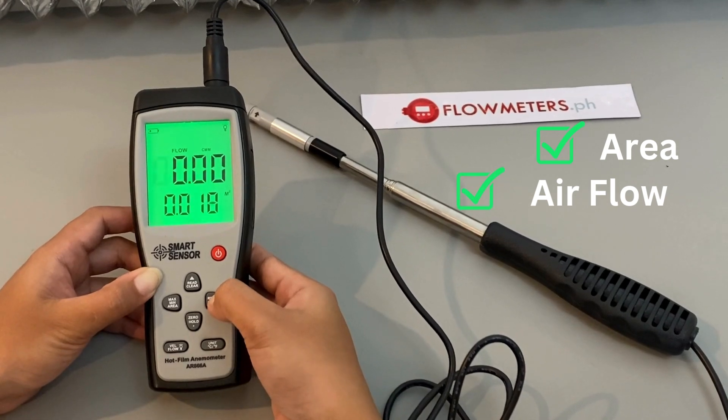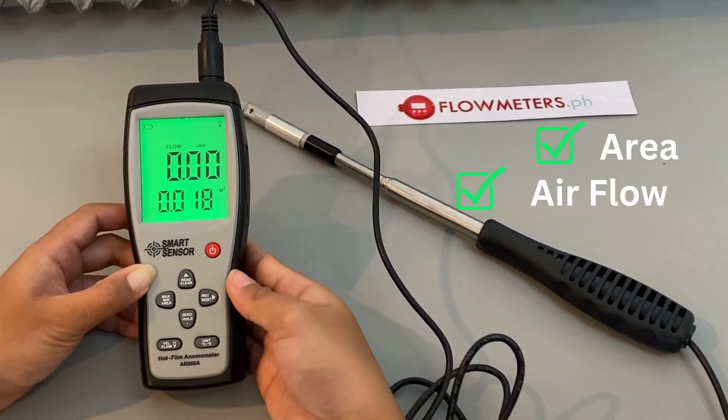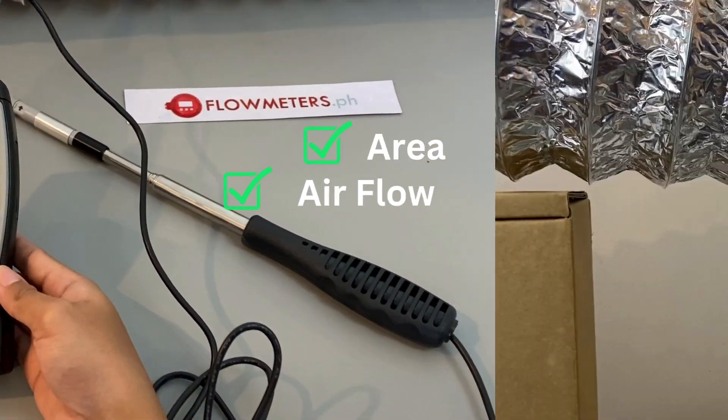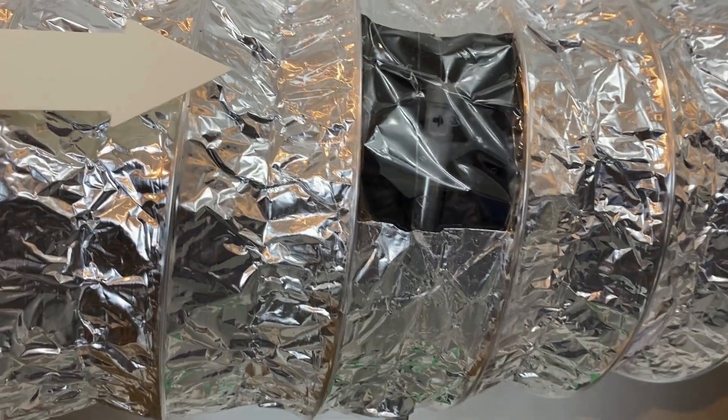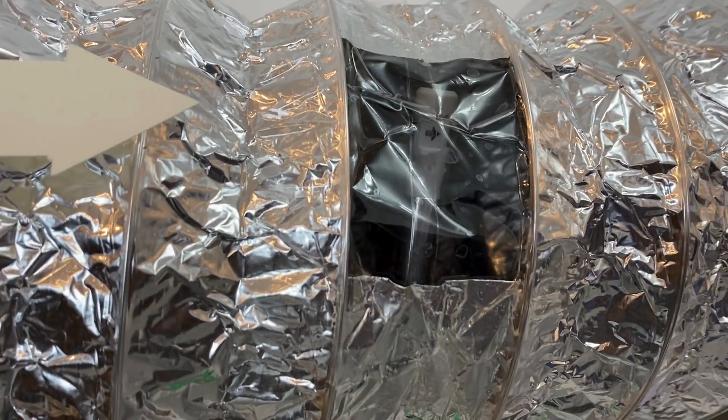Now that your area and air flow units are set, you're ready to test the air flow. Just remember to place the probe in the air flow with the air direction matching the direction of the arrow printed on the tip part of the probe.